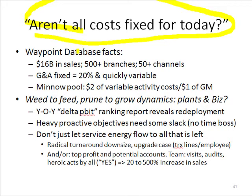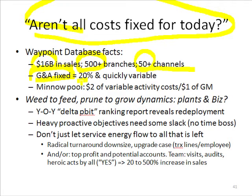Actually, when we look at fixed costs versus variable costs in the Waypoint Analytics universe of clients — Waypoint right now, at the time of this recording, has about $16 billion in total client sales, coming from over 500 different branches and over 50 different channels of distribution, ranging from steel to art supplies — most of these clients, when you look at their cost-to-serve models, about 20% of all operating costs is put in a sort of 'other' category — general administrative overhead. Whereas the rest of the costs, 80%, are very quickly variable.